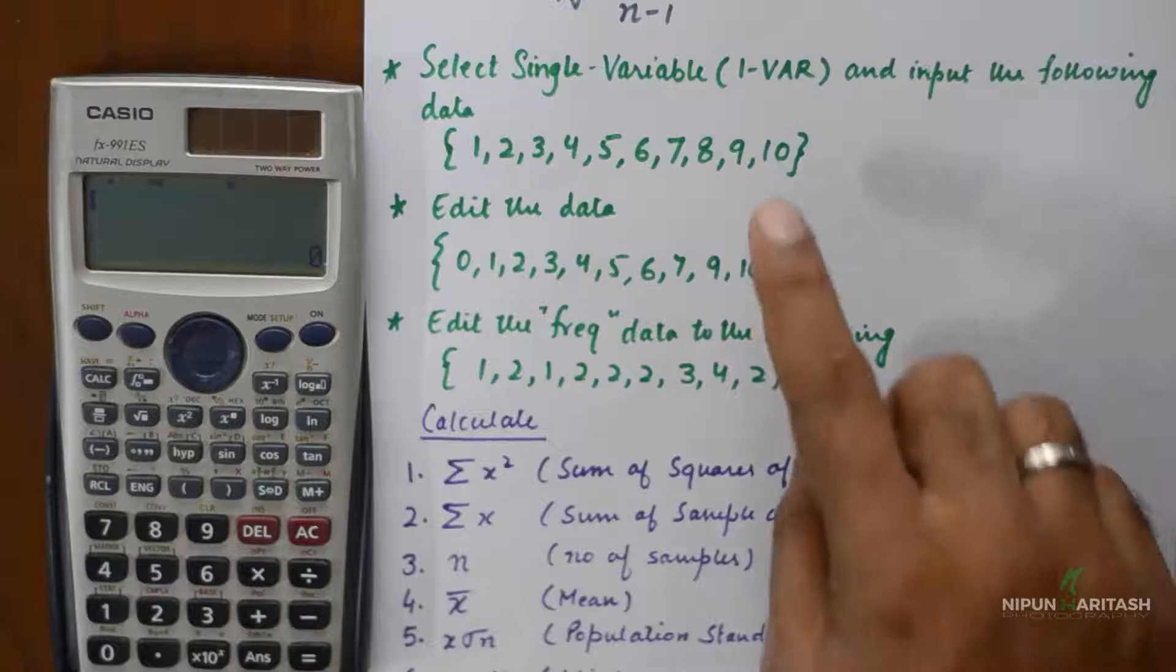We'll keep the frequency on because for this value of X we'll specify the frequency later on. Then press Shift again and press 1 because the alternate function for 1 is Stat. Now the first option is Type, press that.